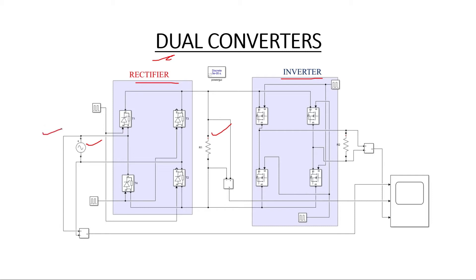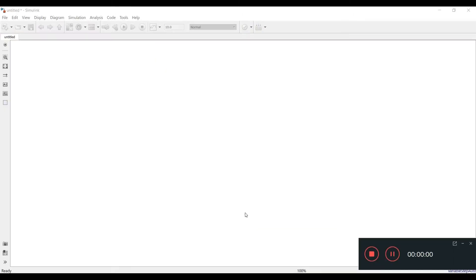Here we are applying AC and getting DC if we use only a rectifier. If we want AC as input and we want both DC and AC outputs for further applications, we can use this dual converter, where we feed the input and get two outputs: one is AC at the inverter output and another is DC at the rectifier output.